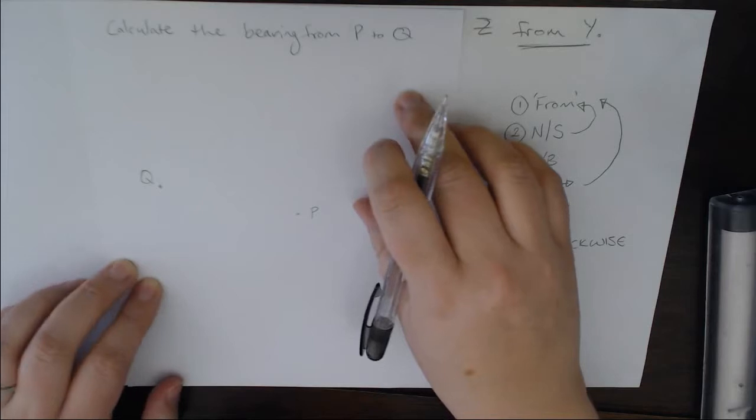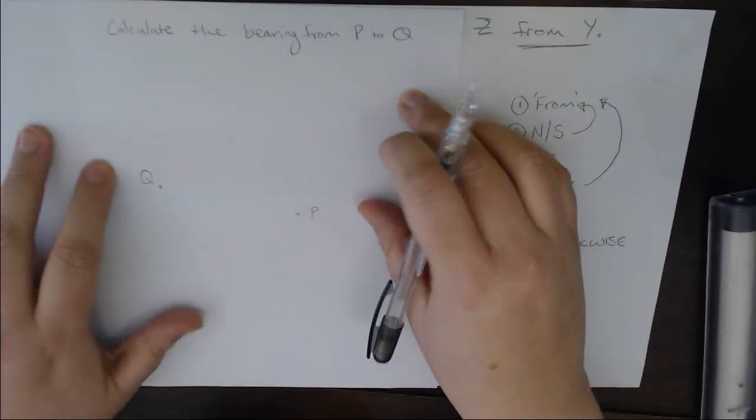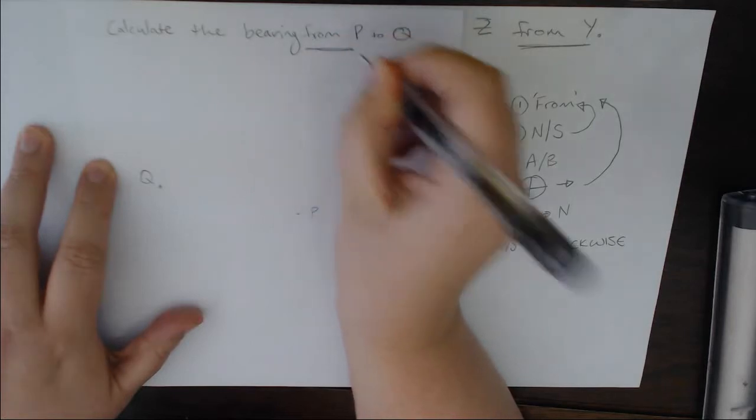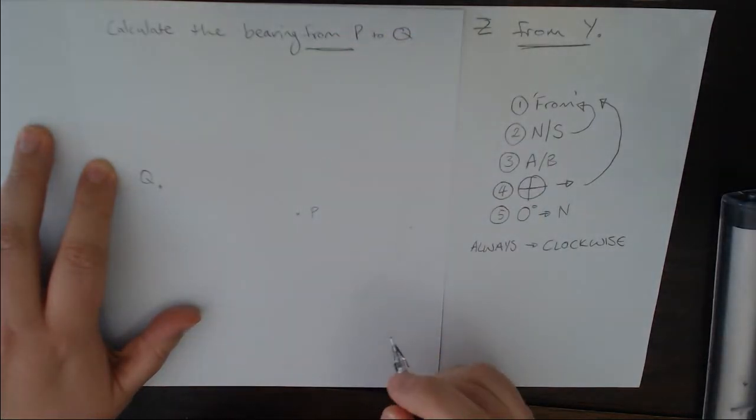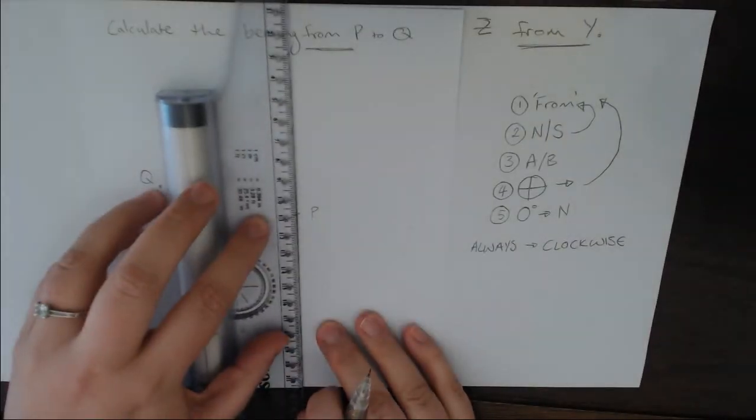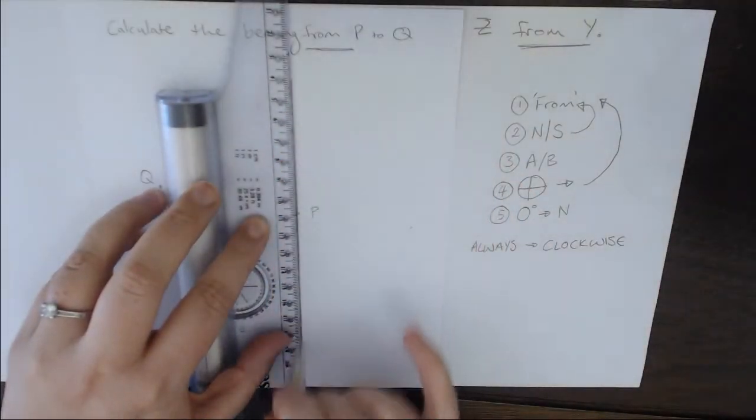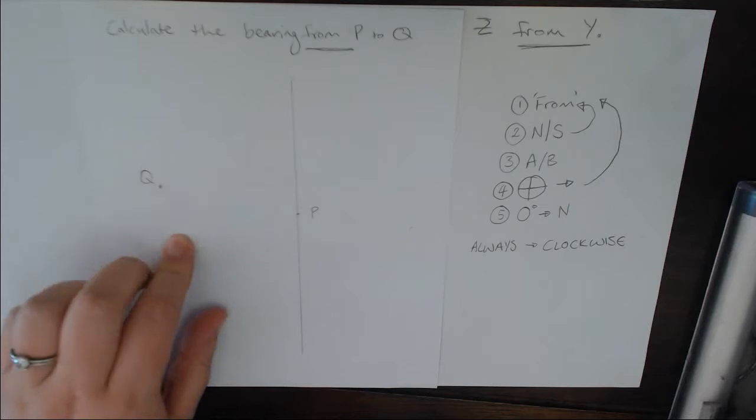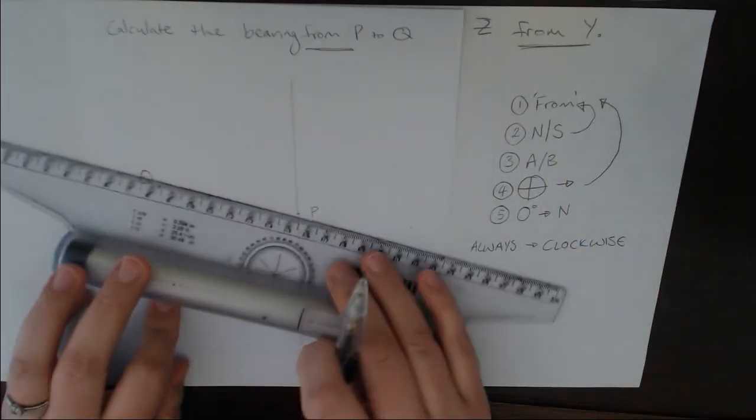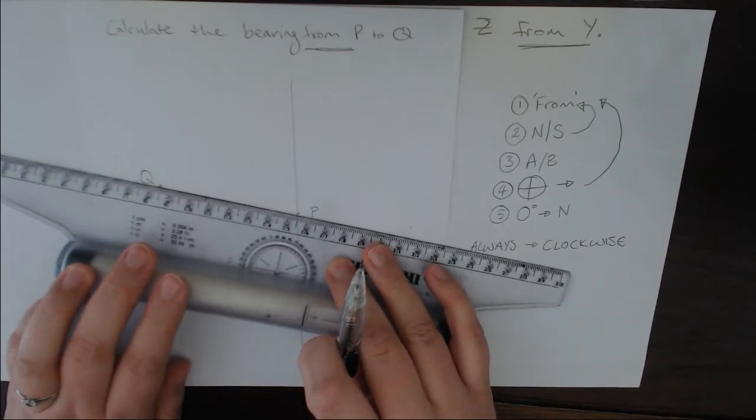Now that gets a little complicated sometimes so let's do this version. I'm calculating the bearing from P to Q. P is my from point so I'm going to draw a north-south line on my from point, and then I'm going to draw my A-B line, in this instance P to Q.